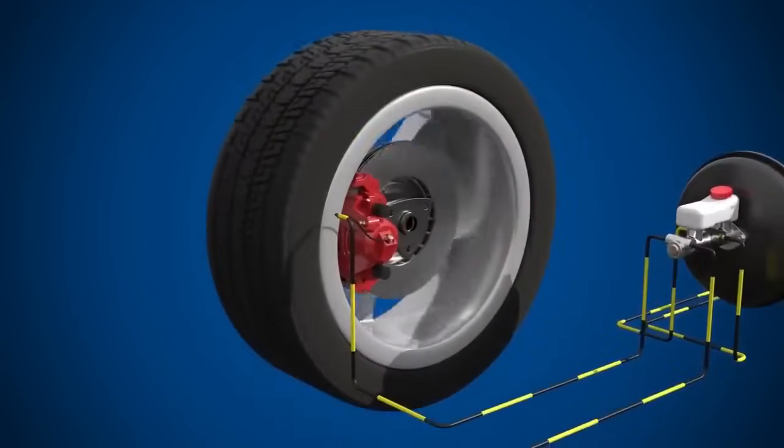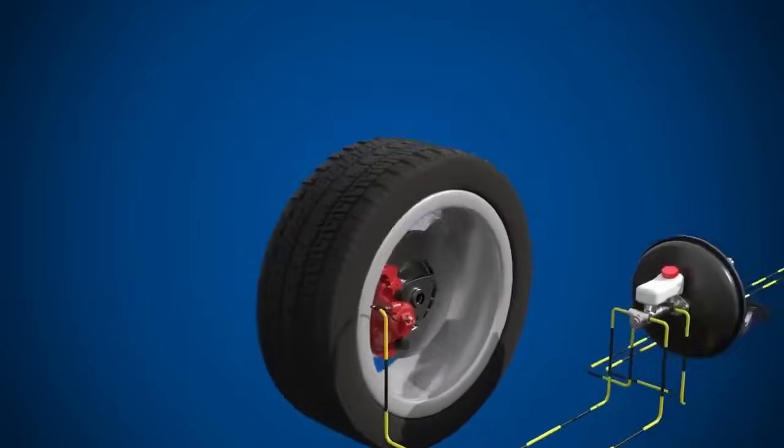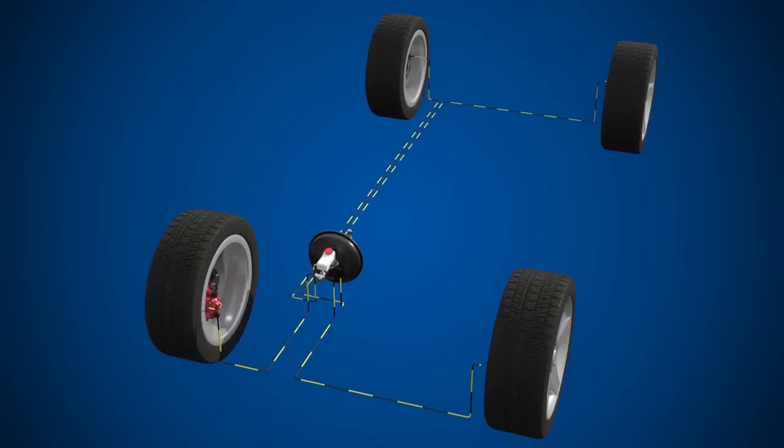Brake fluid travels through the hydraulic lines, applying pressure to the caliper or wheel cylinder pistons, which in turn create the friction force required to slow the wheels. And that's the basics of how a hydraulic brake system works.